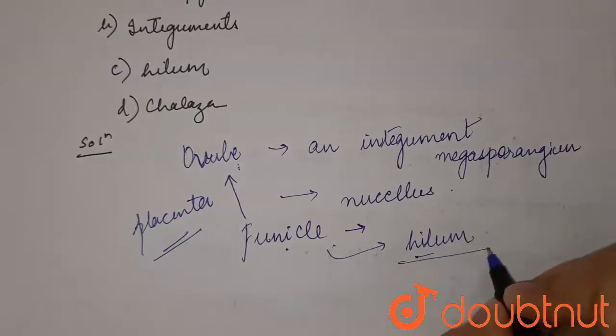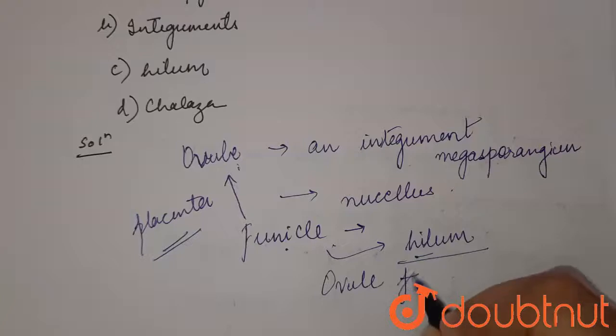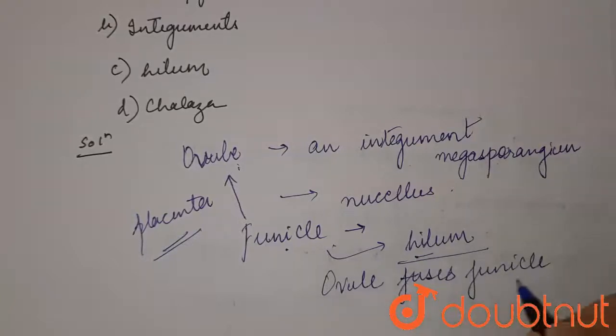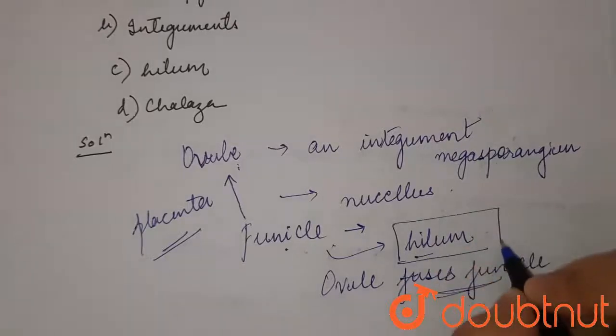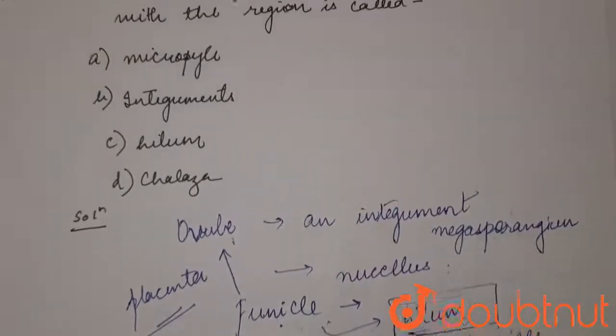So the body of ovule fuses with funicle - that region is known as hilum. Therefore, our answer to the question is option C, hilum.